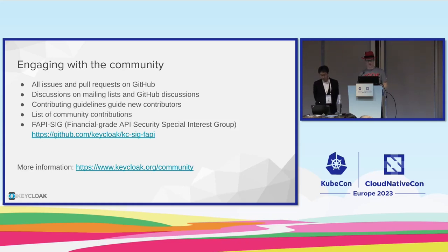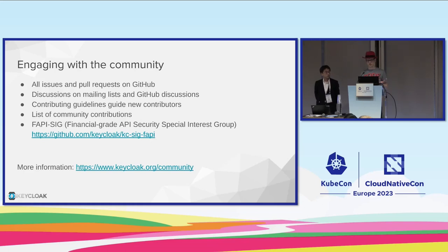If you want to engage with our community, everything is on GitHub. There are discussions on mailing lists and GitHub Discussions, contributing guidelines for new contributors, and a list of community contributions. This is also handing over to the next part of the talk — the FAPI Financial Grade API security special interest group, one of our active user groups.